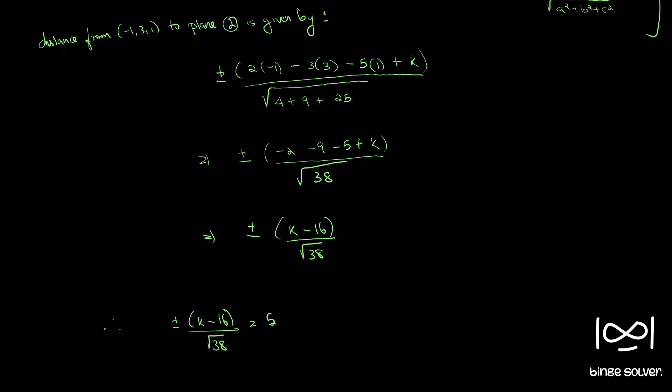Therefore, plus or minus k minus 16 by root 38 equal to 5. So from this we can write that k equal to 5 into root 38 plus or minus... so here we have a plus or minus so that we can write plus or minus 16.